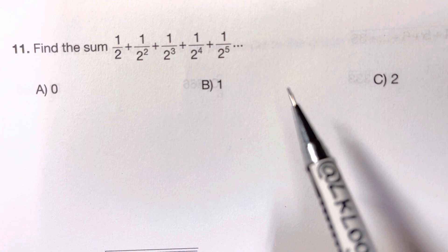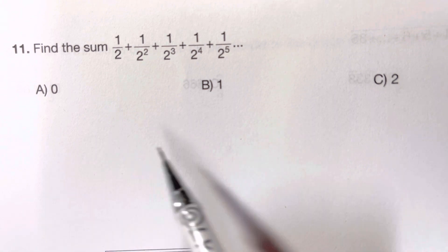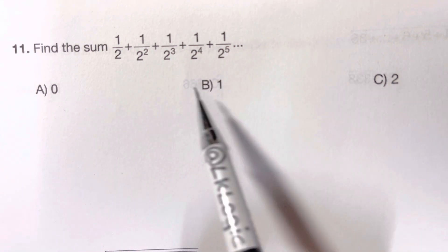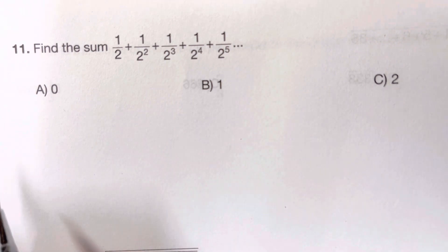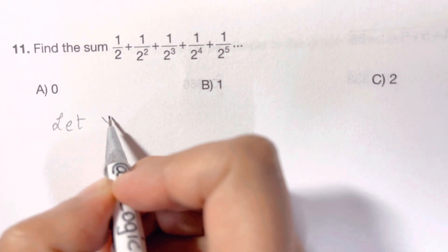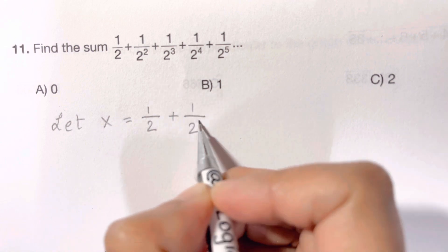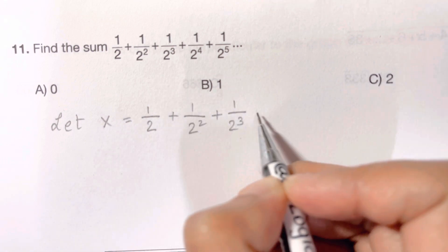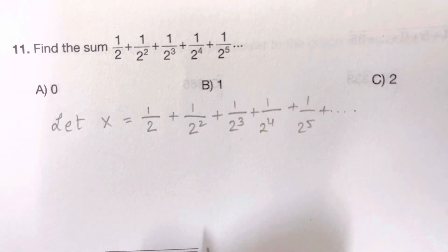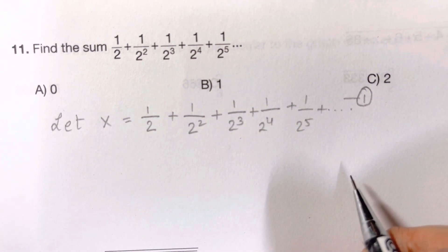So how are we going to solve this question? There's one smart way to get around this: you suppose that this whole equation is equal to x. Let x equal to the same whole equation — one half plus one over two squared plus one over two cubed plus one over two raised to four plus one over two raised to five, and so on. Let this be equation one.